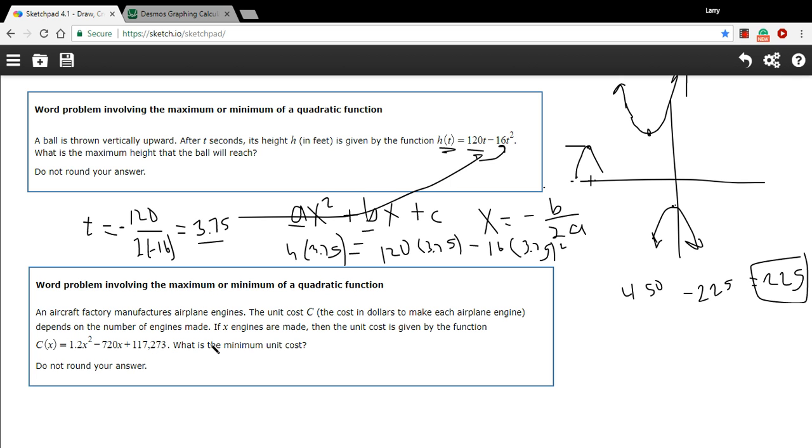It says, an aircraft factory manufactures airplane engines. The unit cost c, the cost in dollars to make each airplane engine, depends on the number of engines made. If x engines are made, then the unit cost is given by this function. Okay, so c of x is 1.2 times x squared minus 720x plus 117,273. What's the minimum unit cost?